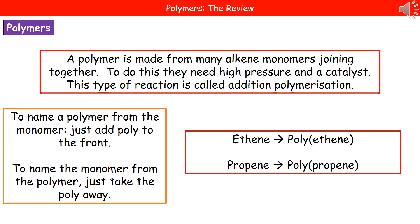When we're joining all these alkene monomers together using high pressure and a catalyst, this is a type of reaction called addition polymerization. We've already encountered the word polymer in our biology course, where we've been looking at things like DNA, for example. We do have other chemical polymers as well, which generally tend to be things like plastics as far as your chemistry course is concerned.